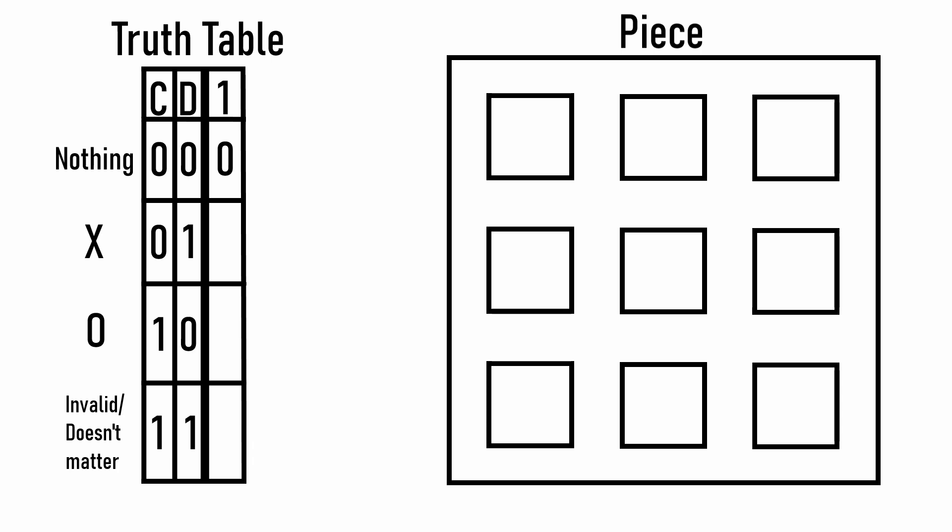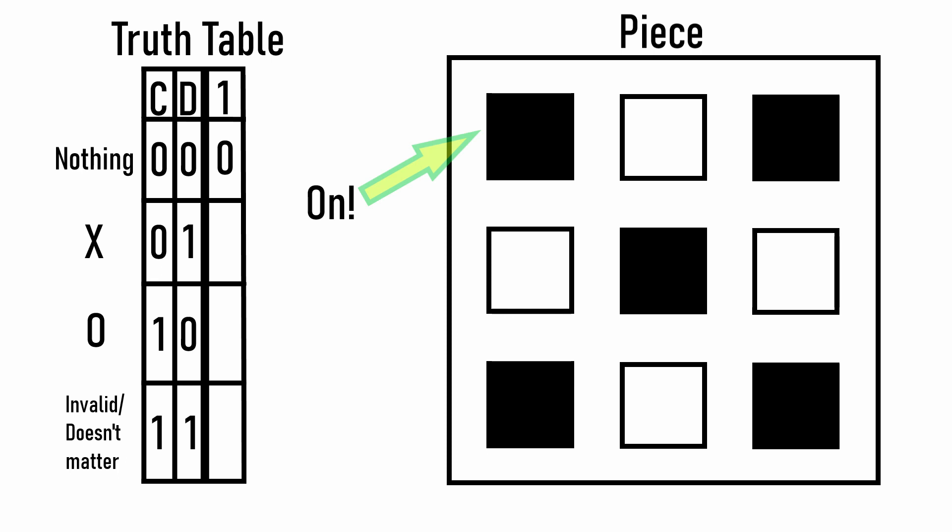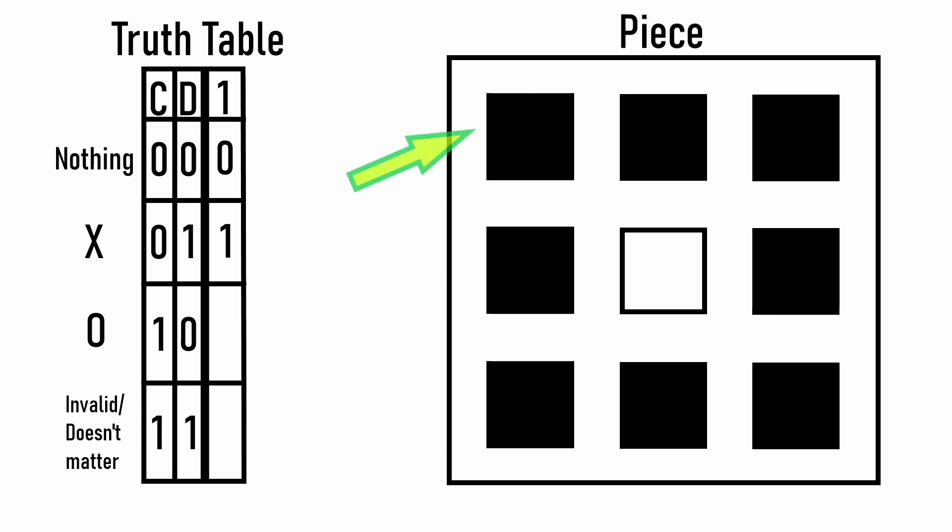If you can imagine how the piece would display an X, you can see here that pixel 1 would need to light up. This means that in this state, the first pixel would need to be a 1 or on. Next, we have the O. Here, pixel 1 would need to light up again, so we can write in a 1.